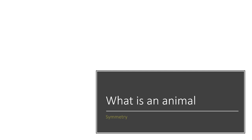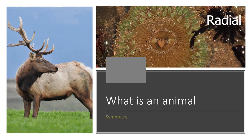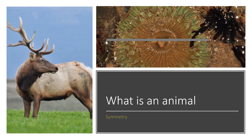A third characteristic of animals is symmetry. We're most familiar with bilateral symmetry, like this elk — it has a right side, a left side, a top, a bottom, a front, and a back. But there's another type called radial symmetry, found in jellyfish or sea anemones, called cnidarians. You could cut them in half in any direction and get the same result on each side.